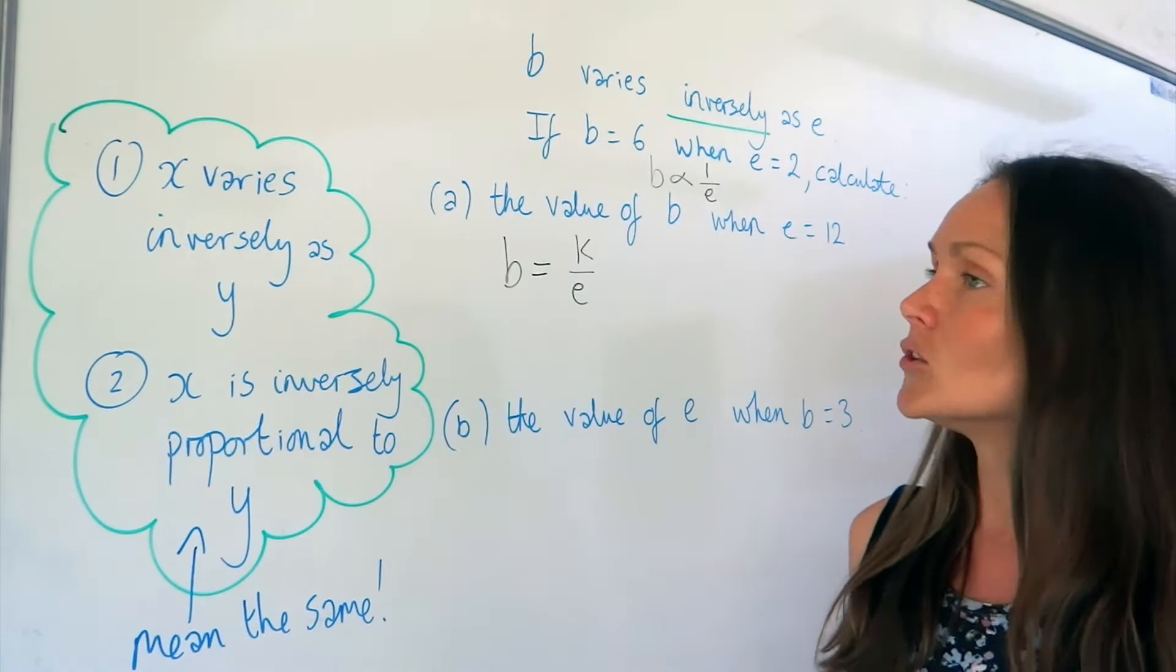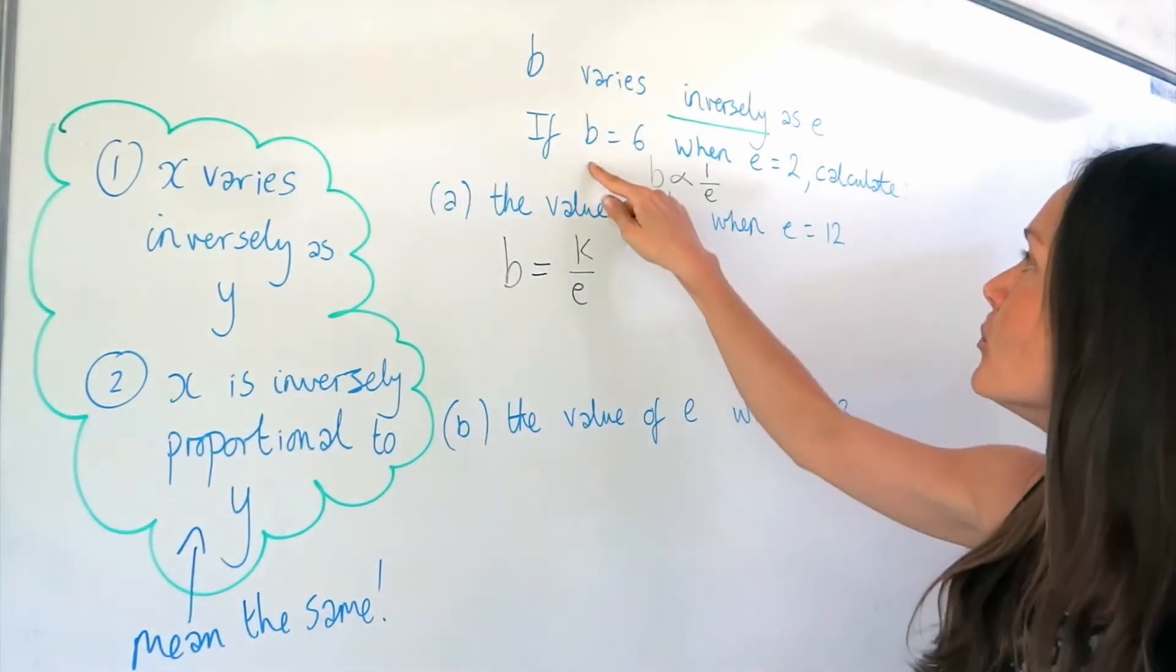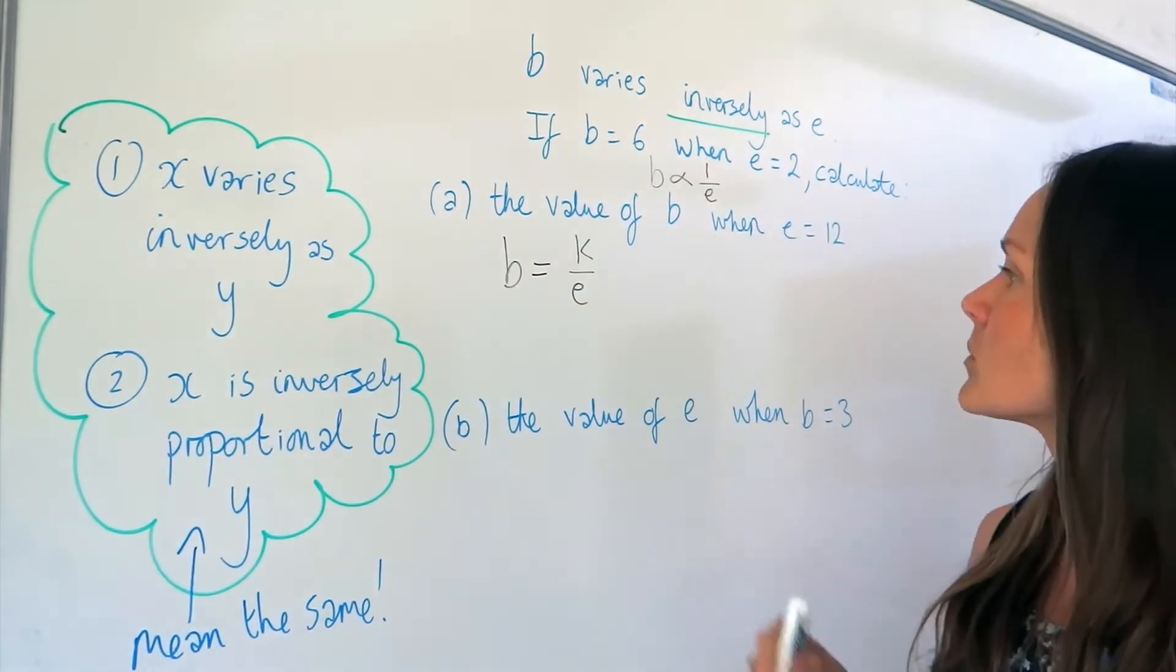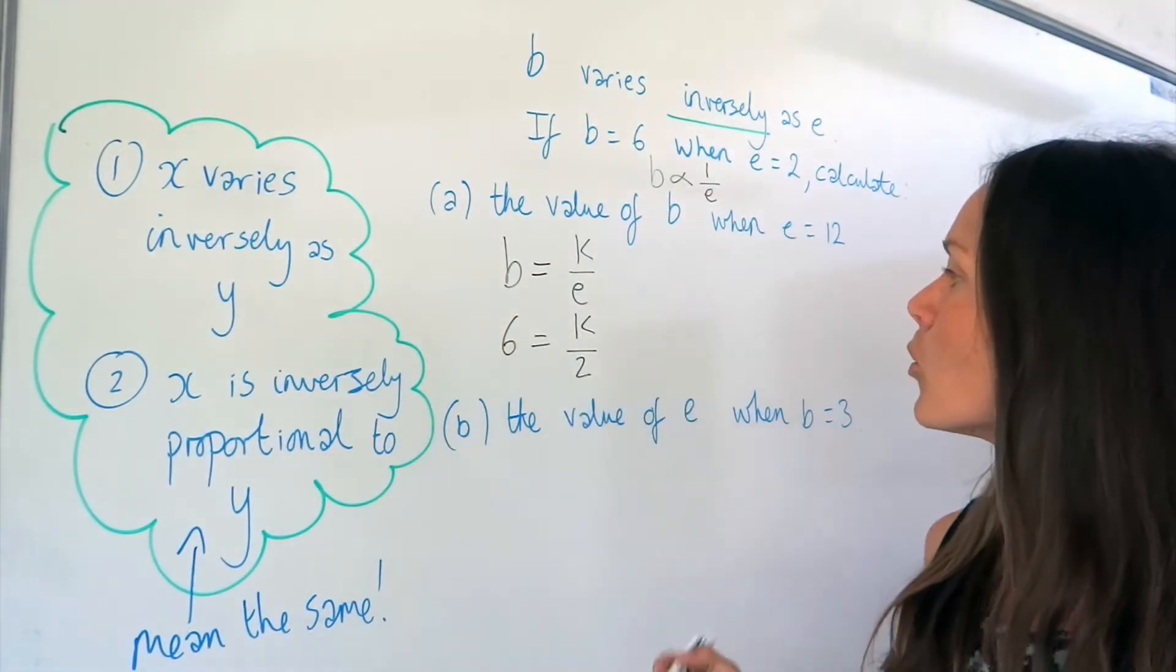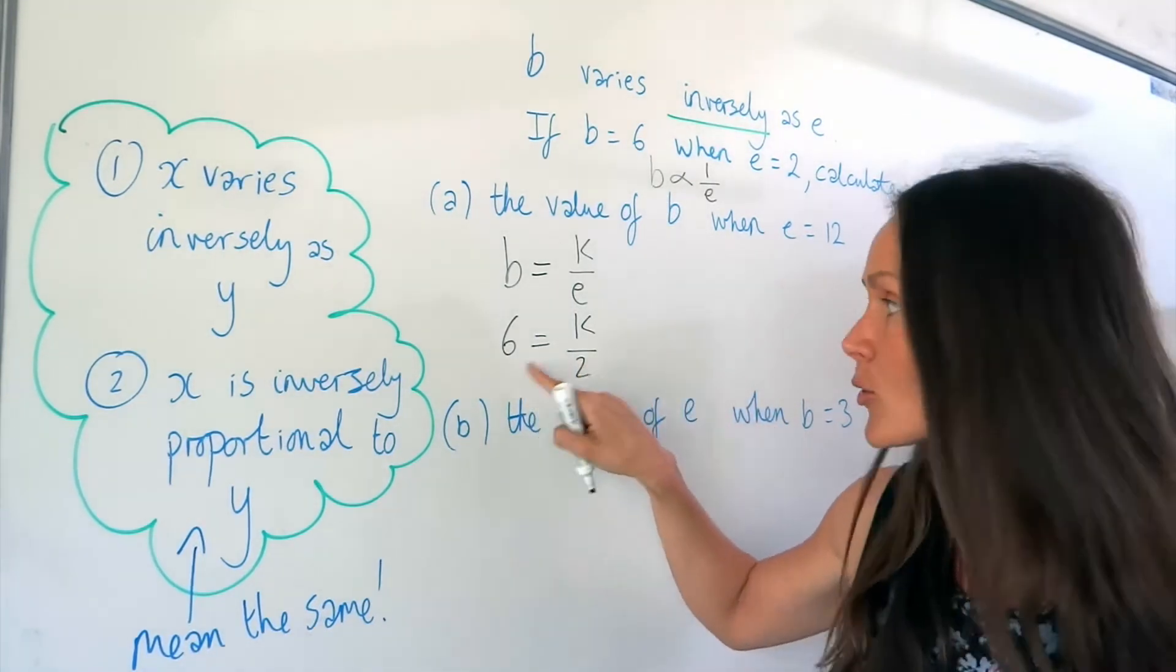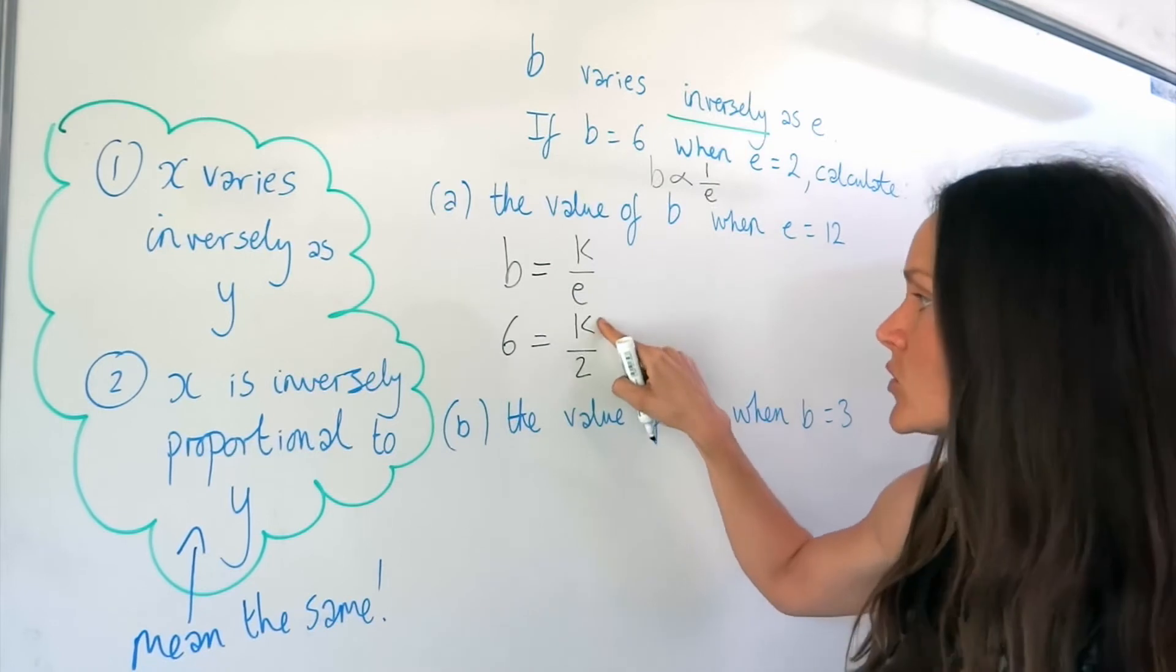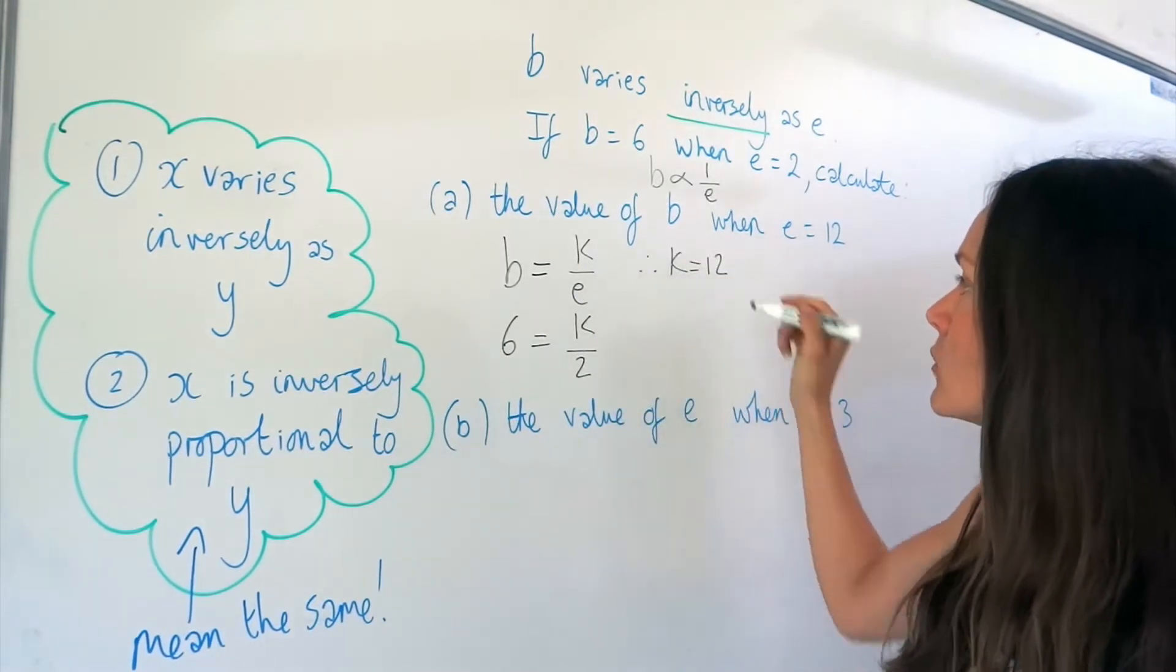So to find K, you need to substitute in the values given in the beginning of the question. So B is 6 and E is 2. So I'm going to change those values. And then I can work out K. Well, something divided by 2 gives me 6, so K must be 12, because 12 divided by 2 is 6. So I found my value of K, the constant.